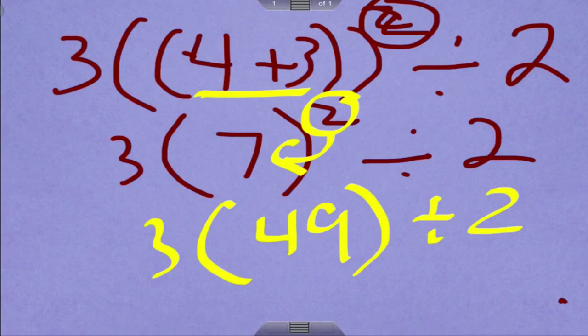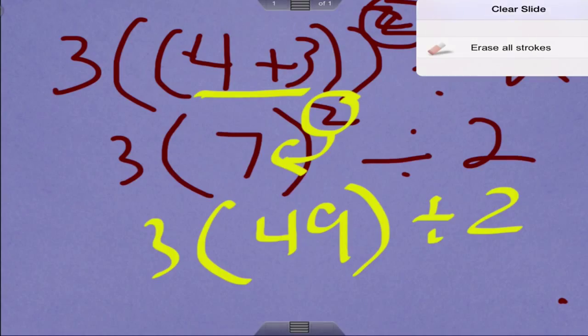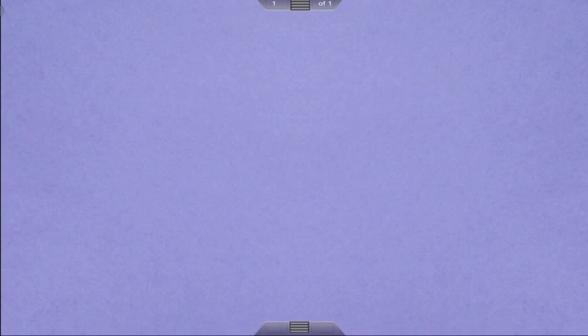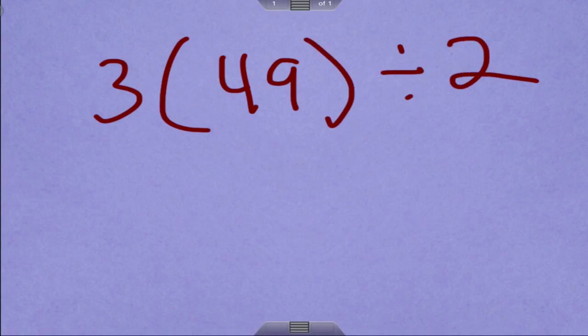I'm going to rewrite this on another screen for us. So it's 3 times 49 divided by 2. So now we do 3 times 49 first. So 3 times 49 is 147.